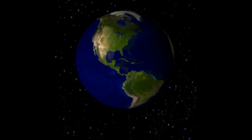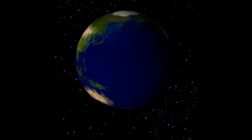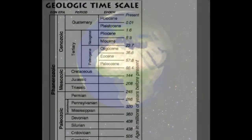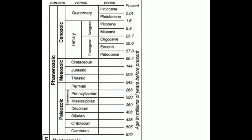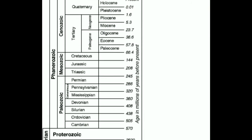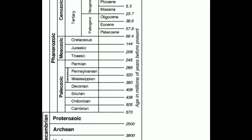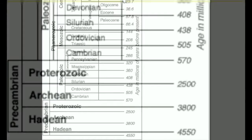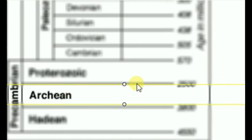How did the Earth form? This question has a lot of answers. Scientifically, geologists use a special timeline called the geologic timescale that is broken up into larger and smaller subdivisions. In this video, we will focus on one of them: the Archean Eon.